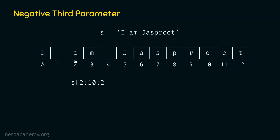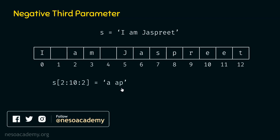We read this character, skip one, read the next, skip one, read the next, skip one, read the next, skip one, and stop — because that is the stopping point. Hence, we get the string: a, white space, a, and p. One thing is clear: the direction is left to right, since the third parameter is positive.